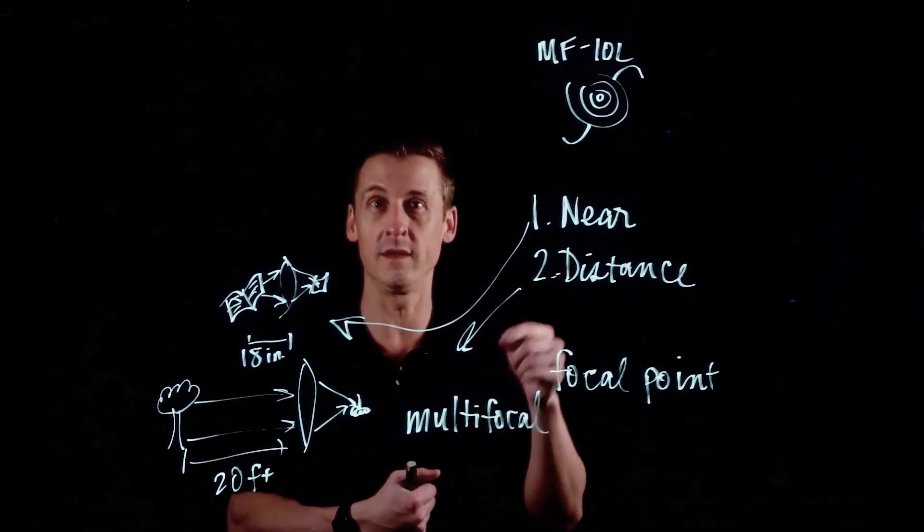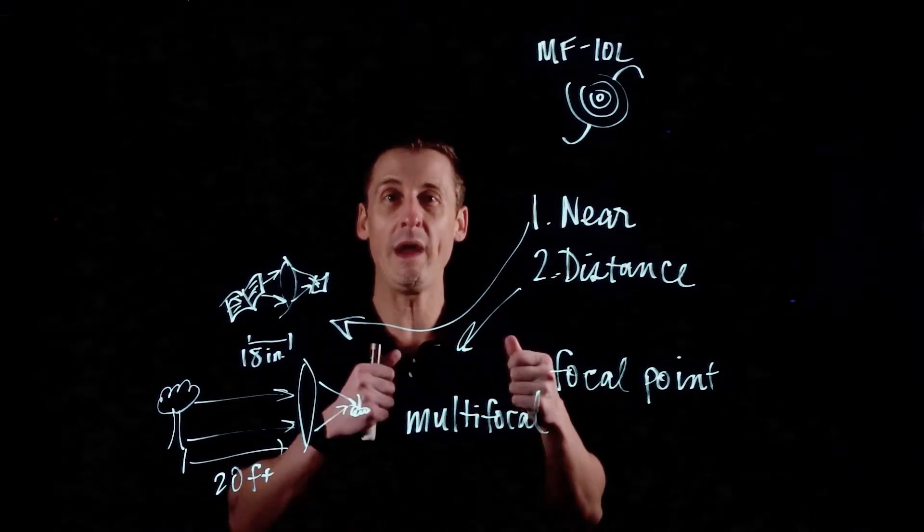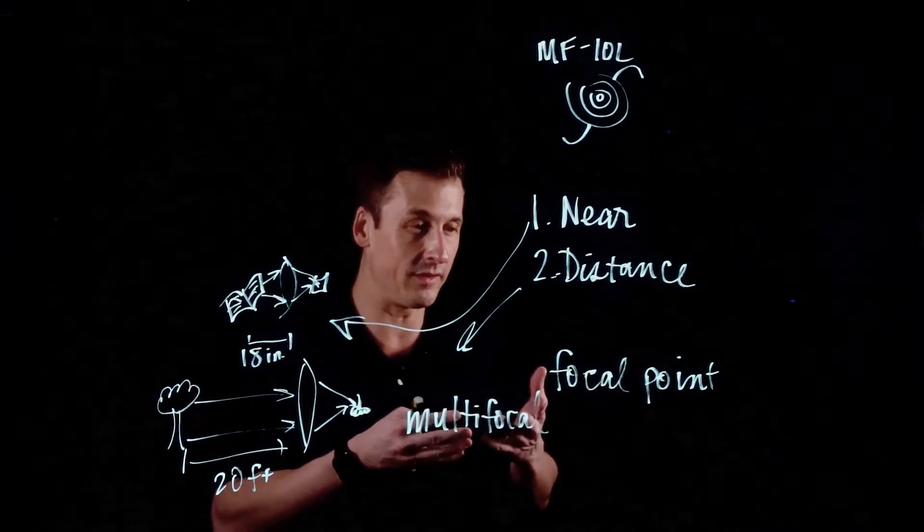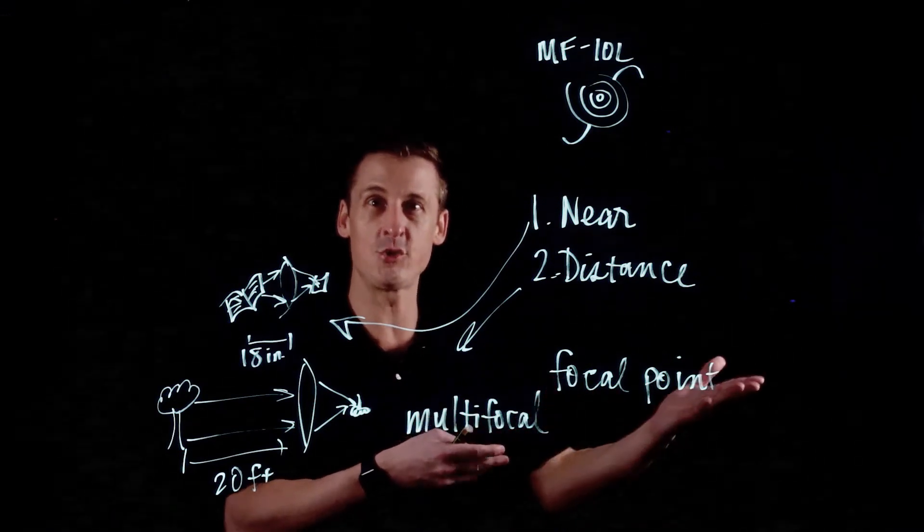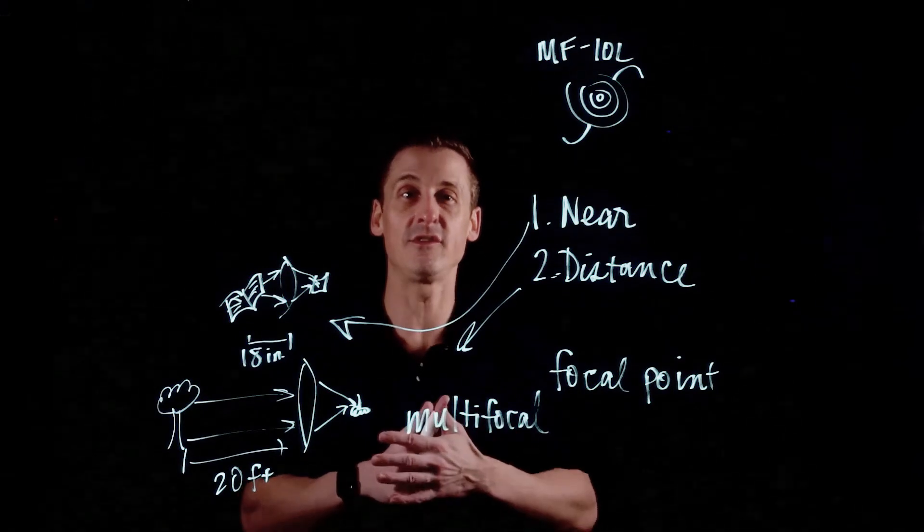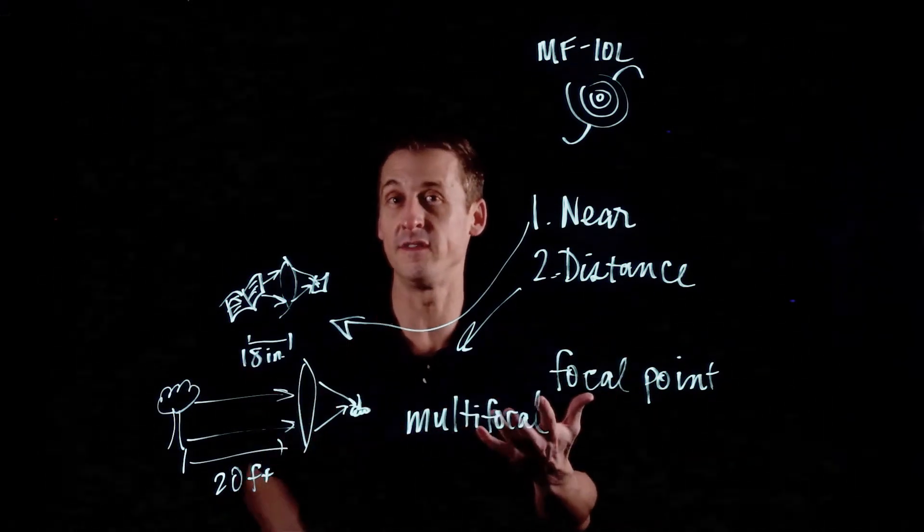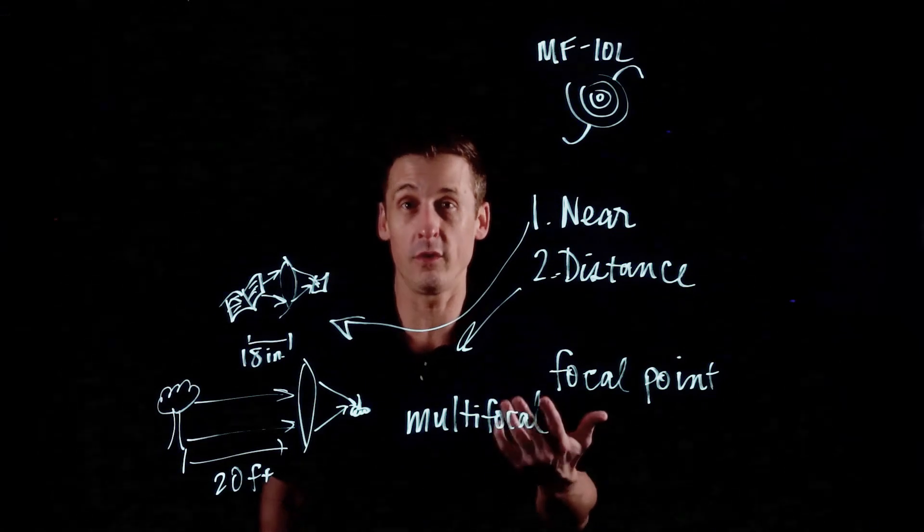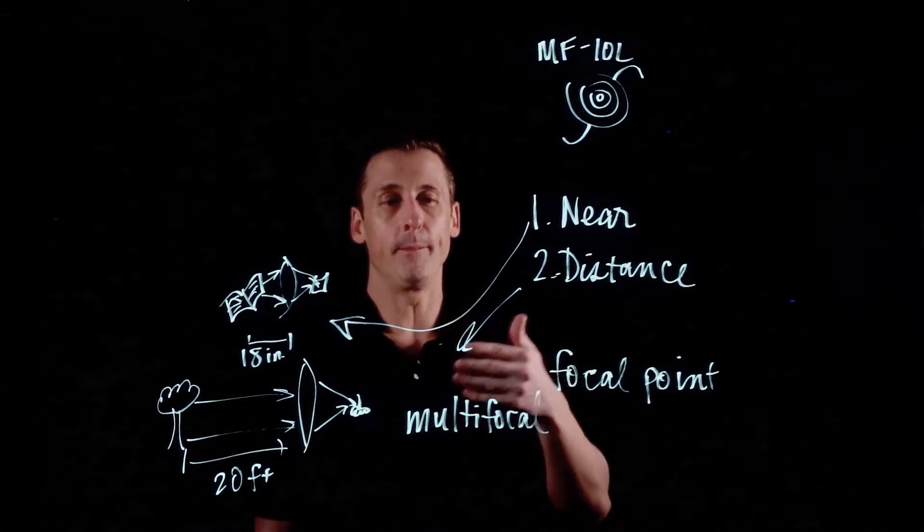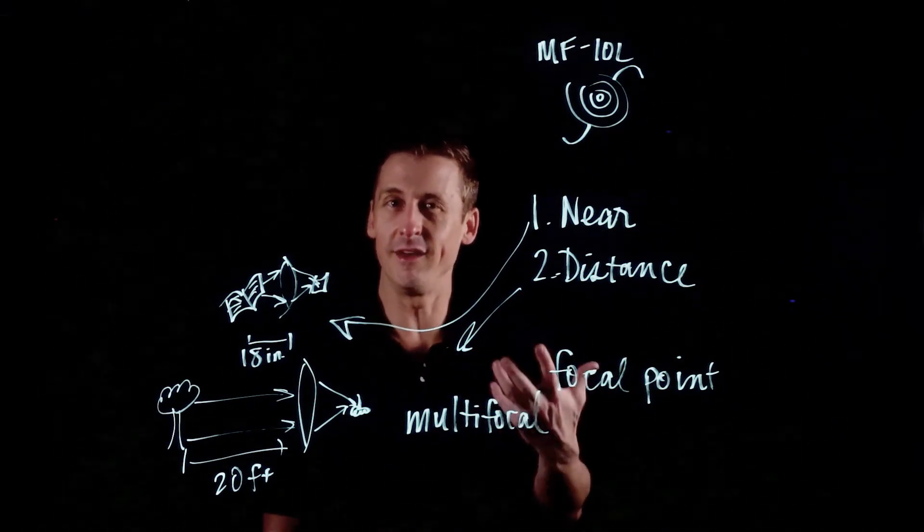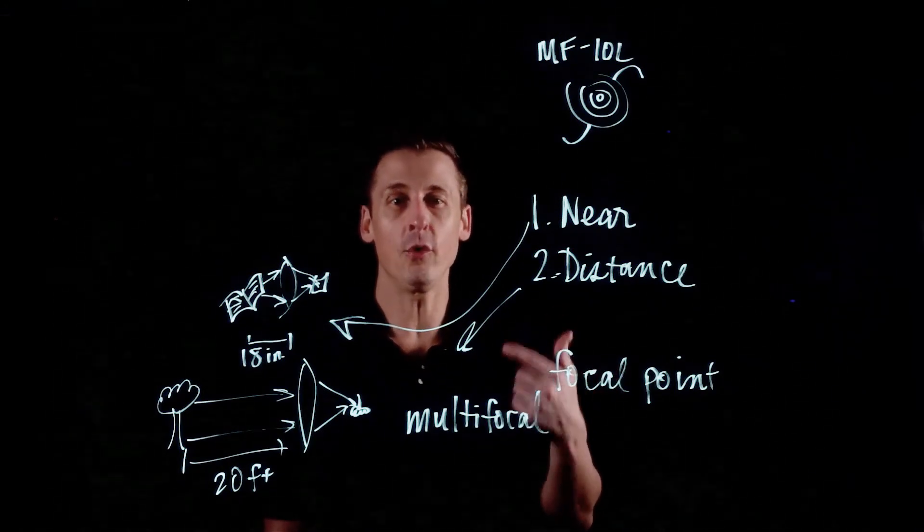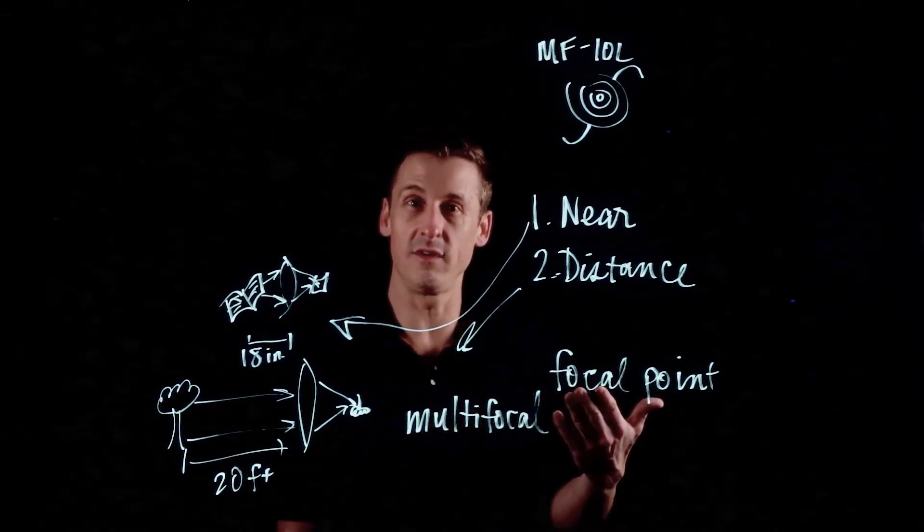You are always looking through the distance part even when you're reading, and you're always looking through the reading part even when you're looking in the distance. The way that you are purchasing your distance and near power is with the currency of your contrast sensitivity. That's not a problem for a lot of eyes because there's actually more contrast sensitivity, more sharpness on the table than is technically necessary in order to be really happy with what you're seeing.